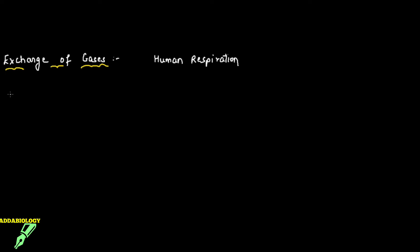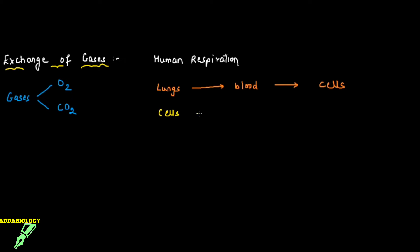Whenever we talk about exchange of gases, we need to understand that there are two gases which are going to play an important role — one is oxygen and another one is carbon dioxide. Oxygen enters the lungs, from lungs it goes into the blood, and from blood it goes to the tissues and cells. Carbon dioxide from the cell travels into the blood making it deoxygenated, and then it enters the lungs and is eliminated through the nose. So it appears to be a very simple process, but it is not so simple.